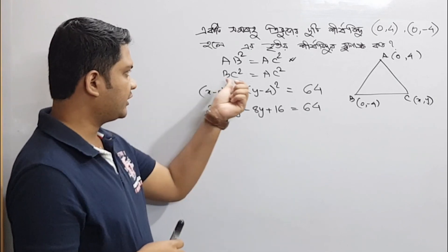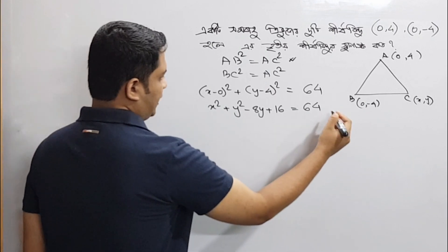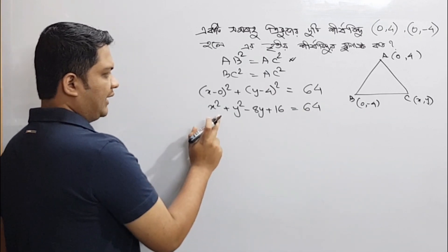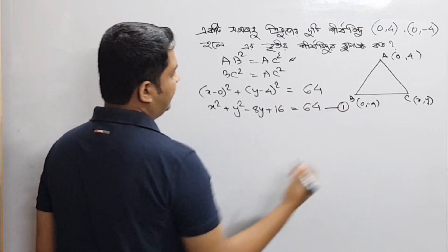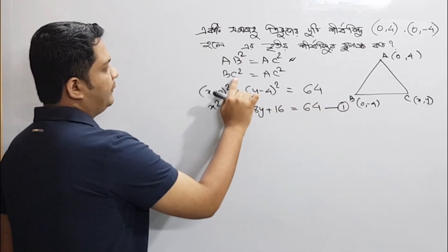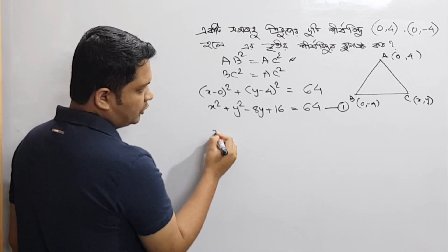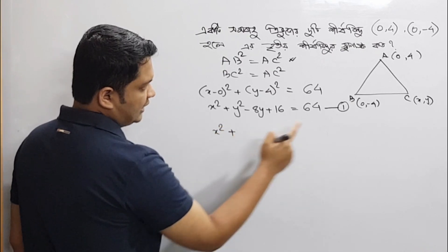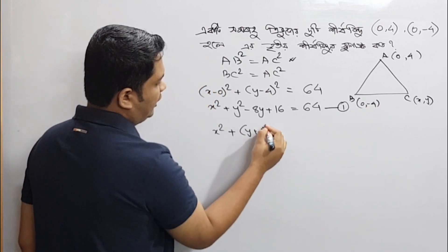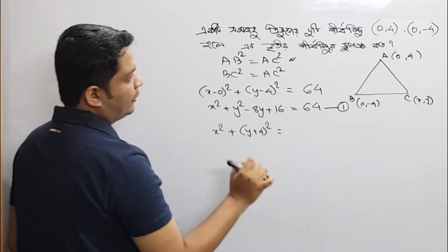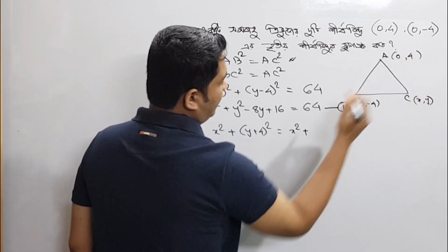And the same thing is b squared is equal to s squared. We can see x squared is equal to s squared, and c squared is equal to s squared. So b squared, we can see b squared is x squared plus y, because y is equal to s squared. That means this is x squared plus y minus 4 squared.